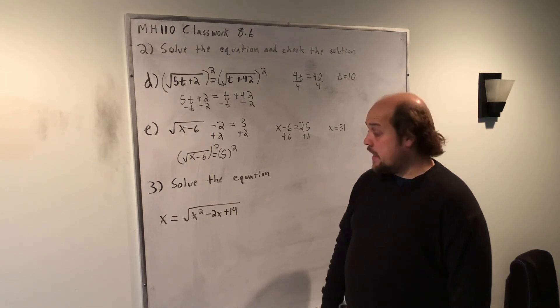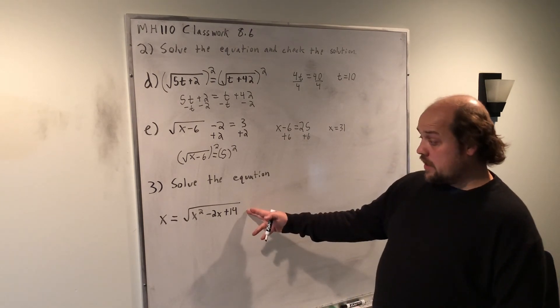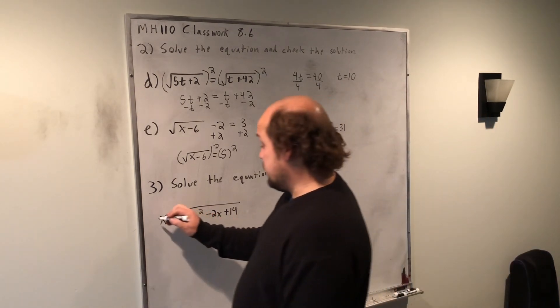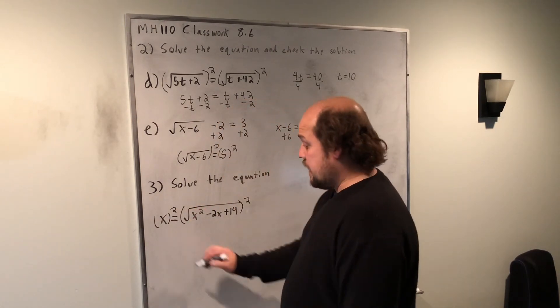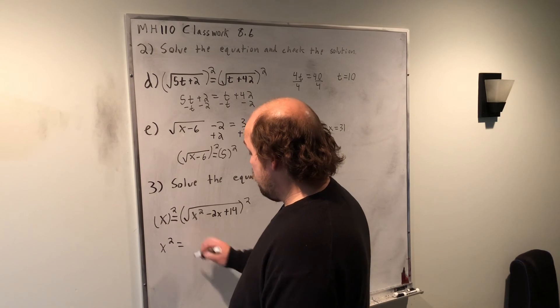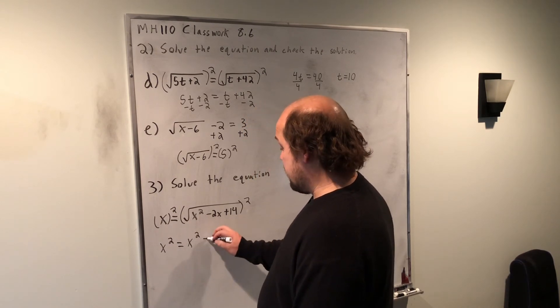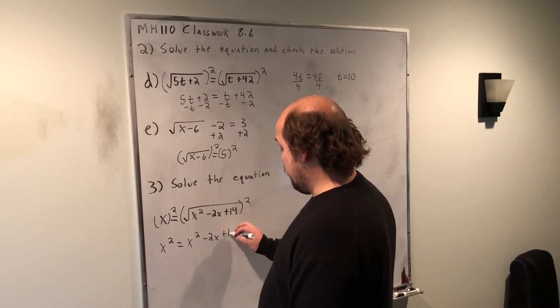For the final problem on this classwork, I have the root isolated on the right, so I can square both sides. When I square the left-hand side, it becomes x squared. When I square the right-hand side, it goes out of the root and becomes x squared minus 2x plus 14.